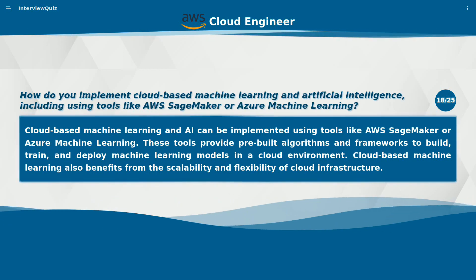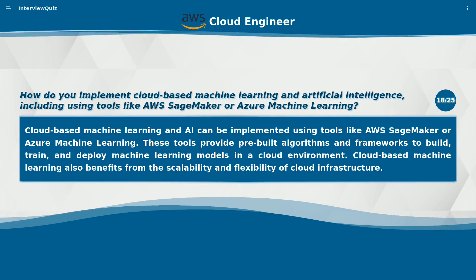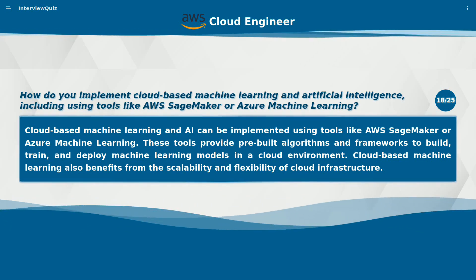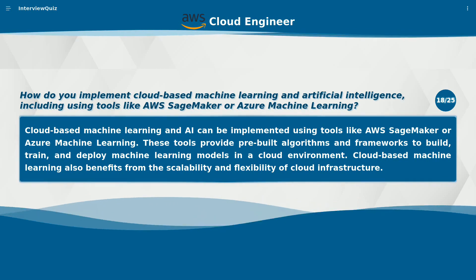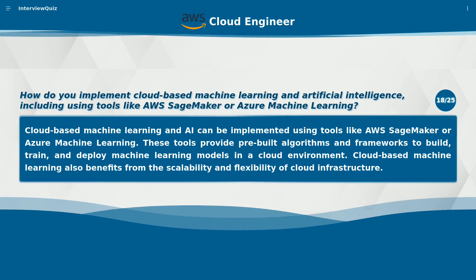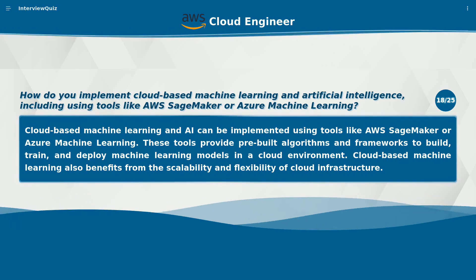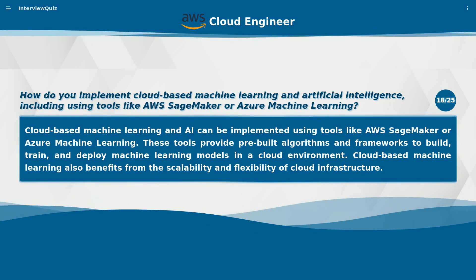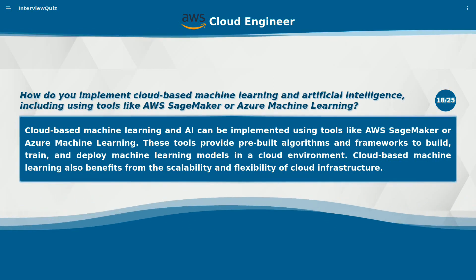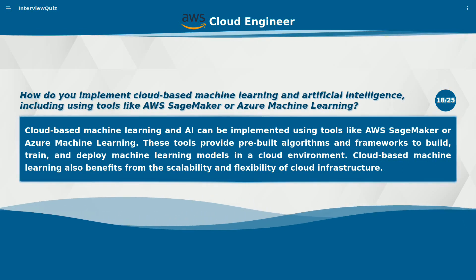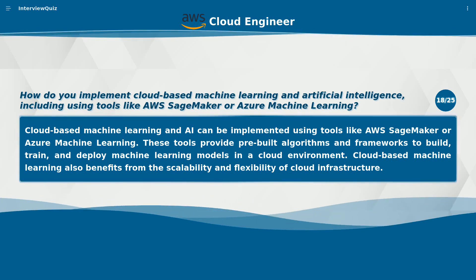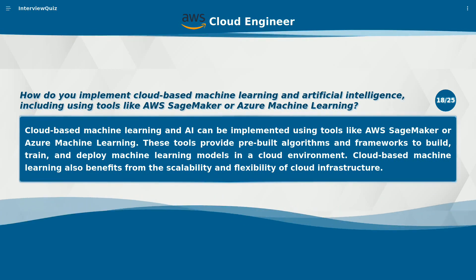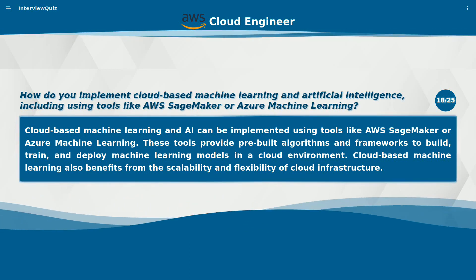How do you implement cloud-based machine learning and artificial intelligence, including using tools like AWS SageMaker or Azure Machine Learning? Cloud-based machine learning and AI can be implemented using tools like AWS SageMaker or Azure Machine Learning. These tools provide pre-built algorithms and frameworks to build, train, and deploy machine learning models in a cloud environment. Cloud-based machine learning also benefits from the scalability and flexibility of cloud infrastructure.